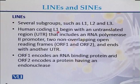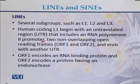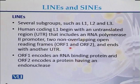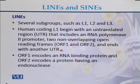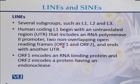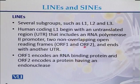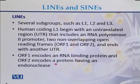The human coding L1 LINE begins with a 5' UTR region that includes an RNA promoter, followed by two non-overlapping open reading frames called ORF1 and ORF2, and it ends with a 3' UTR region. ORF1 encodes an RNA binding protein, while ORF2 encodes a protein having endonuclease activity.